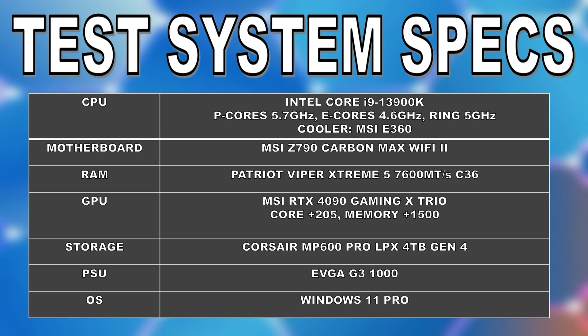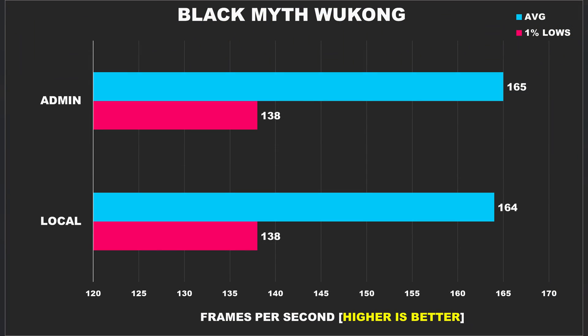All games were tested at 1080p using a high preset, no upscaling or frame generation was turned on, and most post-processing like motion blur and depth of field were turned off, along with ray tracing disabled. Starting us off is Black Myth: Wukong — the new game everyone is talking about. The game is absolutely gorgeous and I've been having quite a blast playing it lately.